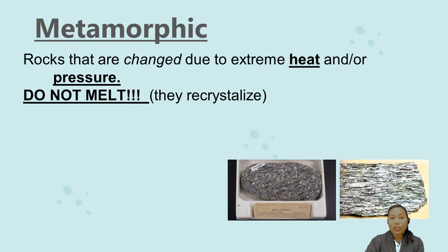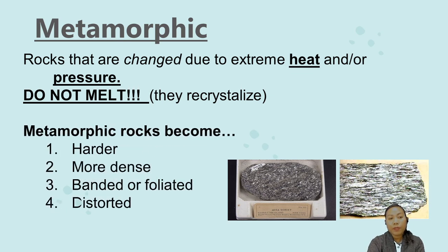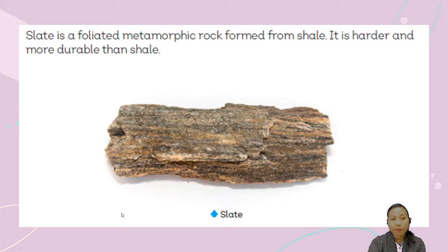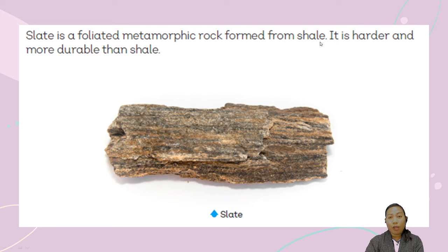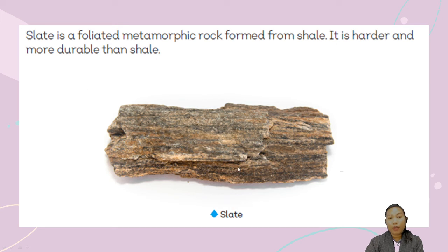Unlike sedimentary rocks that can be crushed for cement or pottery, metamorphic rocks become harder, more dense, bonded, and foliated or distorted. An example of a metamorphic rock is slate. Slate is a foliated metamorphic rock formed from shale. Shale is a kind of sedimentary rock. Slate is harder and more durable than shale.